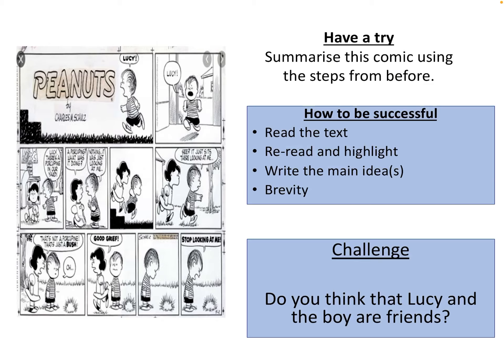Your task now: read this comic, then highlight just a few bits you think are important, and rewrite the main ideas. Be brief — summarize what happens. I don't want 'this happens and this happens and then this and this.' Maybe one or two sentences — you saw how brief my example was. If not, go back and have a look. And if you've written one or two sentences, I want you to think about: do you think Lucy and the boy are friends?